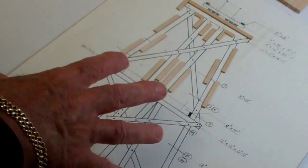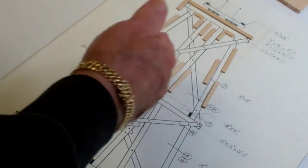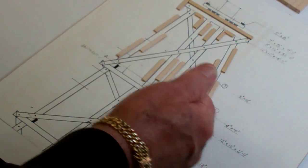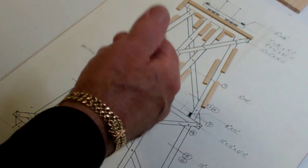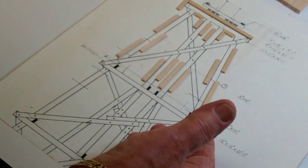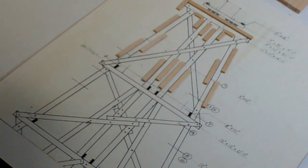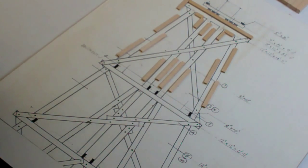Now, the narrow gauge, the D&RGW narrow gauge, doesn't have diagonal bracing on the outside. That's more common on standard gauge. This is a fairly lightweight railroad with equipment, so the diagonal bracing was never done on these, except in very special extenuating circumstances where there might have been lateral loads.